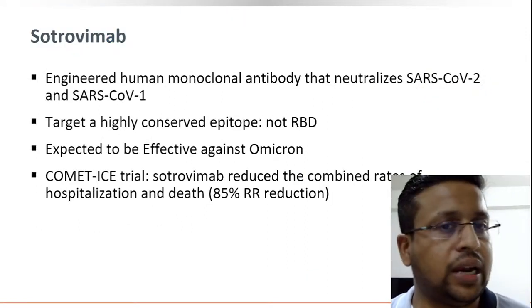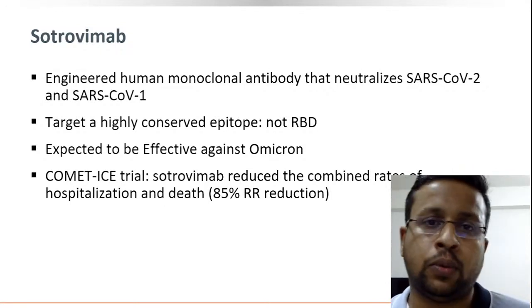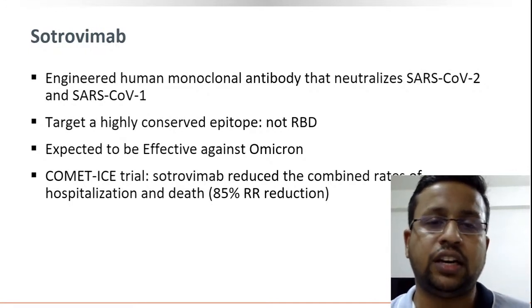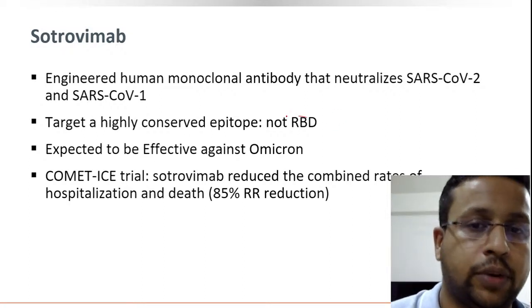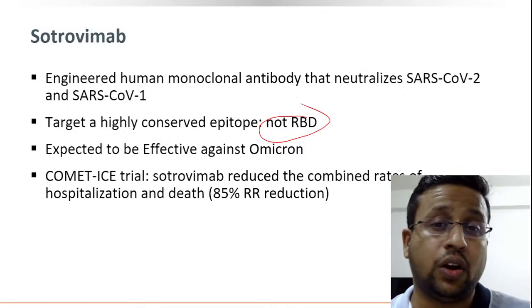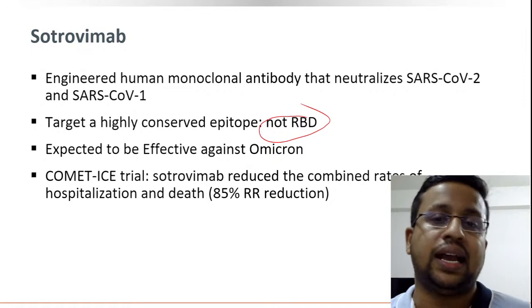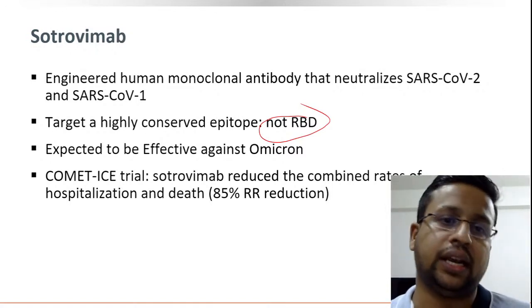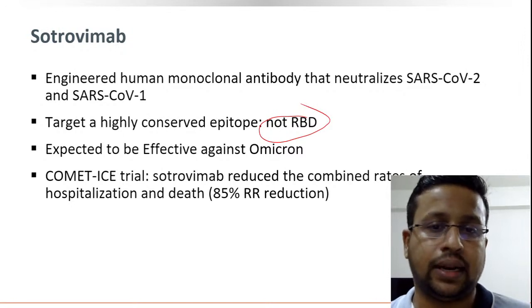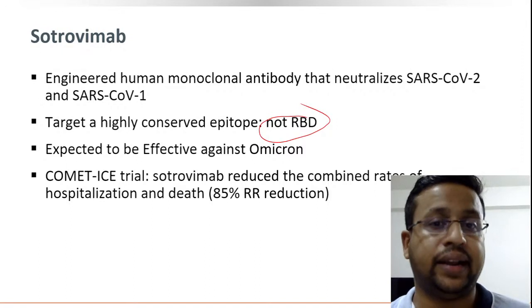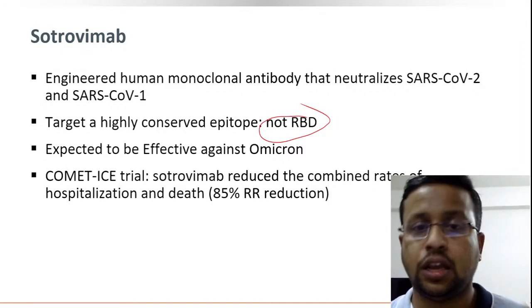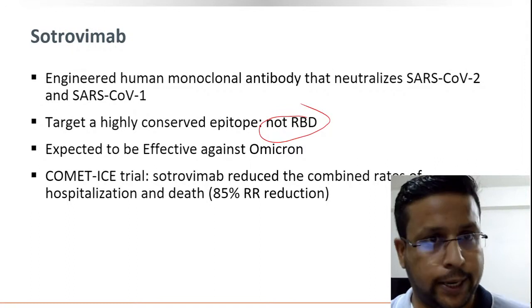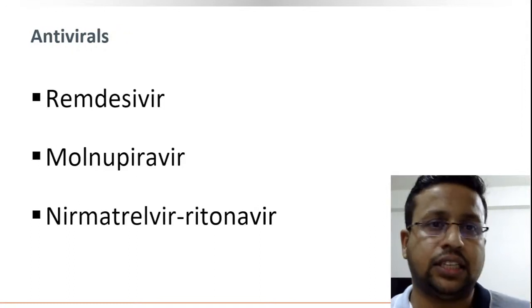Sotrovimab is an engineered human monoclonal antibody that neutralizes both SARS-CoV-2 and SARS-CoV-1. It targets a conserved epitope on the spike protein outside the receptor binding domain and is therefore not affected by Omicron's RBD mutations, so it is expected to be effective against Omicron. The COMET-ICE trial found sotrovimab decreased the rate of hospitalization and death by 85%, though that trial did not include Omicron patients.